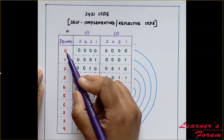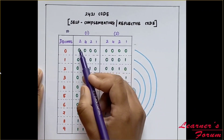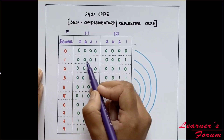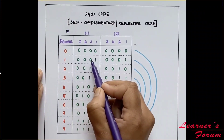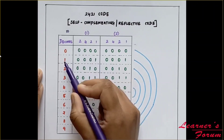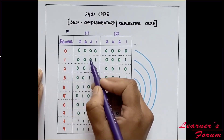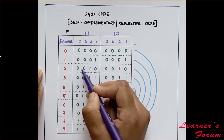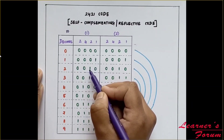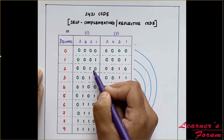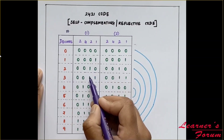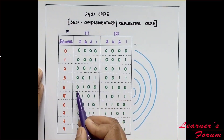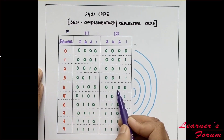Since it is a decimal type, decimal means it has a value of 10, so from 0 to 9 we have taken the values. We have two techniques to represent in 2421. For 0, we take four zeros. For 1, it is 0001 — adding all 4 bits we get 1. For 2, we write 0010. For 3, it is 2 plus 1, so under 2, 1, 1 we have 1, which gives 0011. For 4, it is 0100.